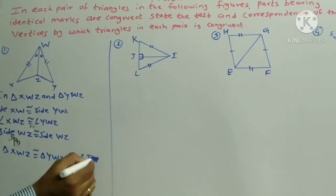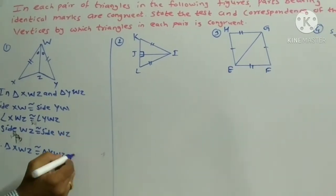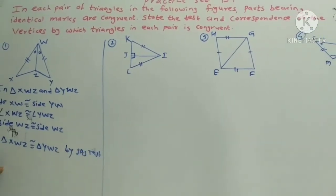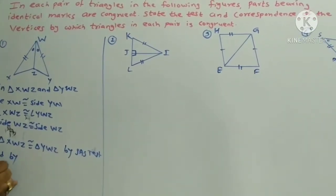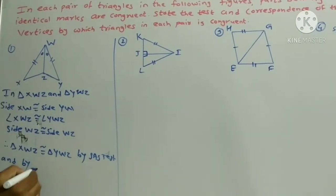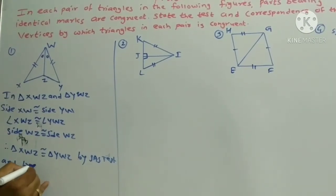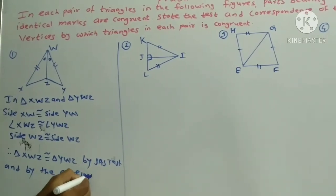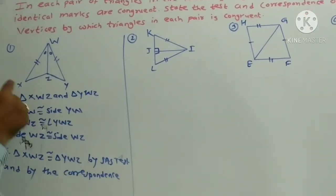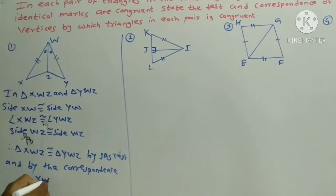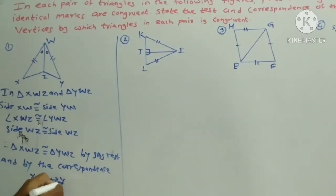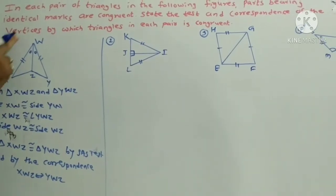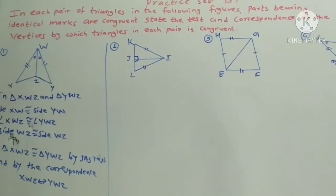Therefore, both triangles XWZ are congruent to triangle YWZ by the Side-Angle-Side (SAS) test. By the correspondence, XWZ corresponds to YWZ — and that is what we have to show.